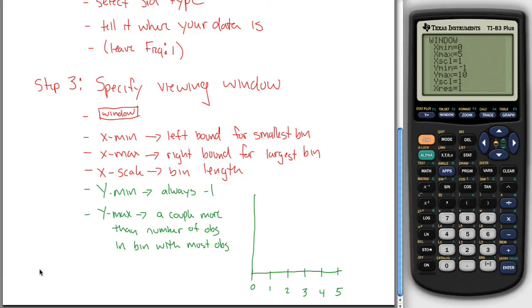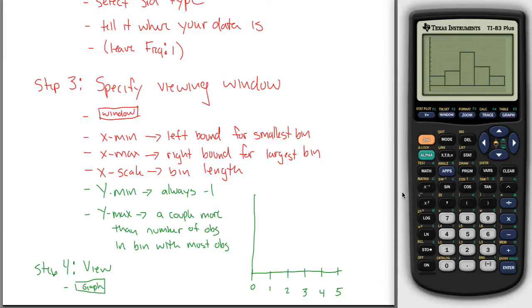Step 4 is view. You can view this thing. All you got to do is hit the graph key. So if I hit graph over here, bam, my histogram pops up. Pretty nice little histogram. Looks like I have an approximately normal histogram.